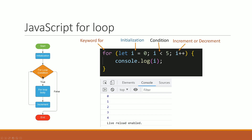1 is less than 5 — true. So console.log prints 1. Be incremented, i++. So 1 becomes 2. 2 is less than 5 — true. So console.log prints 2. Being incremented, i++ gives 3. 3 is less than 5 — true. Console.log prints 3. Then 3 plus 1 equals 4.